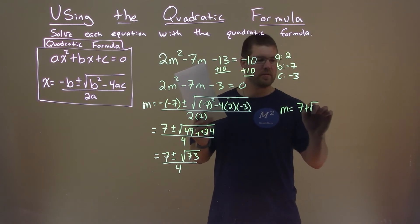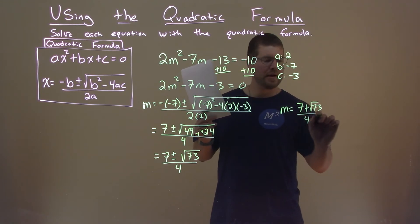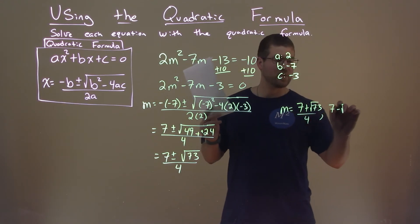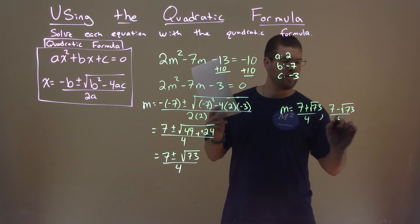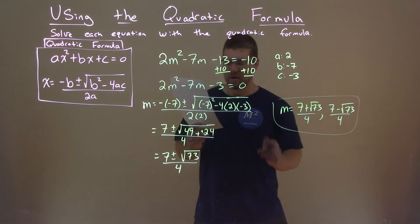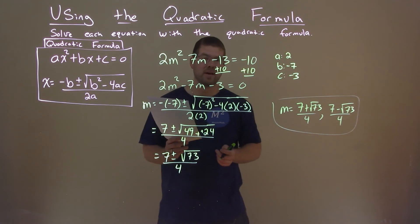We have 7 plus square root of 73 over 4, and 7 minus square root of 73 over 4. And those are our two final answers.